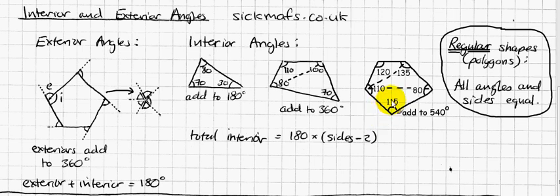There's 180 there, there's 180 there, and there's 180 there. And three times 180 makes 540. So, you've got the interior angles for a five-sided shape.